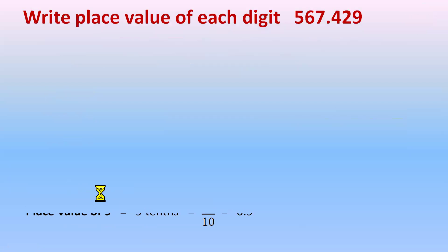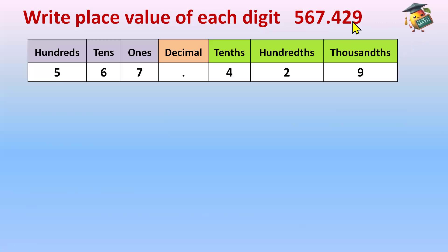Moving further — the next question is: write the place value of each digit. We have the number 567.429. We need to write the place value of each digit. Use the shortcut method: write ones, tens, hundreds above the digits before the decimal, write decimal above the decimal point, and tenths, hundredths, thousandths after it. So 7 is ones, 6 is tens, 5 is hundreds. The place value of five is five hundreds, or 500.